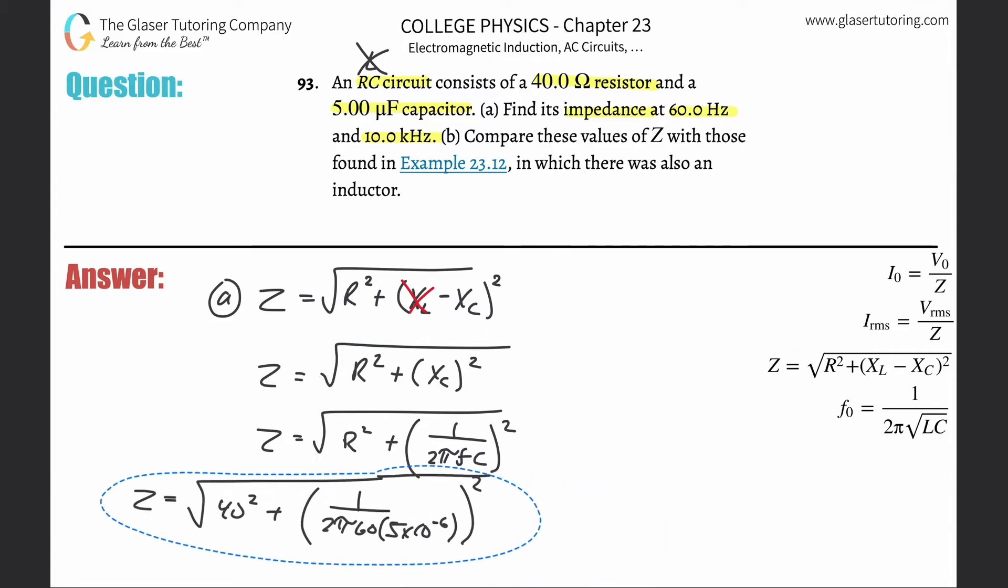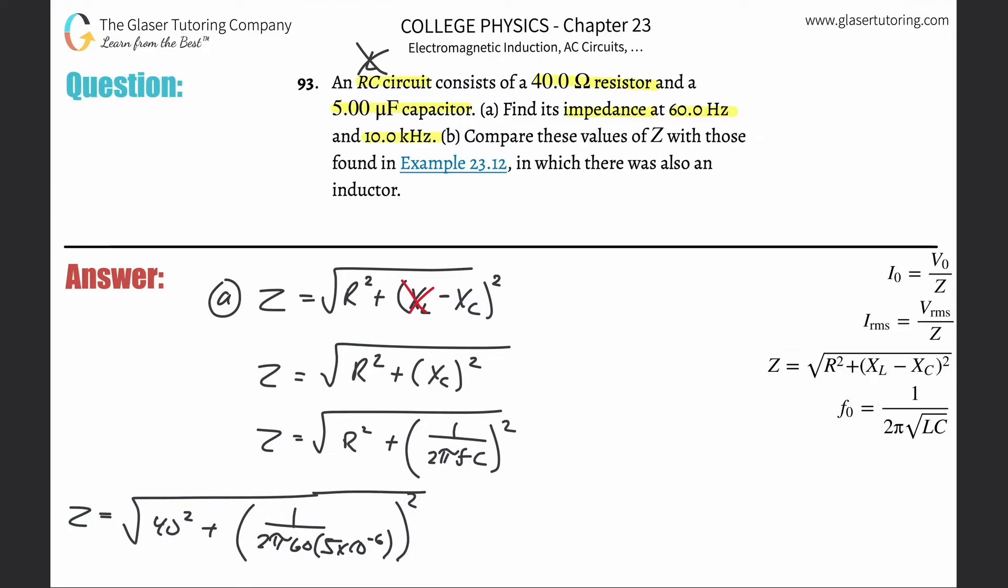The second calculation is the same: 40 squared plus one over two pi times the new frequency of 10 kilohertz, which is 10 times 10 to the third hertz, times 5 times 10 to the minus sixth. Don't forget to square it.